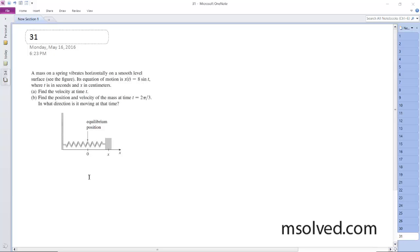All right, we have a mass on a spring vibrating horizontally on a smooth level surface. The equation of motion is x(t) = 8sin(t), where t is in seconds and x in centimeters.